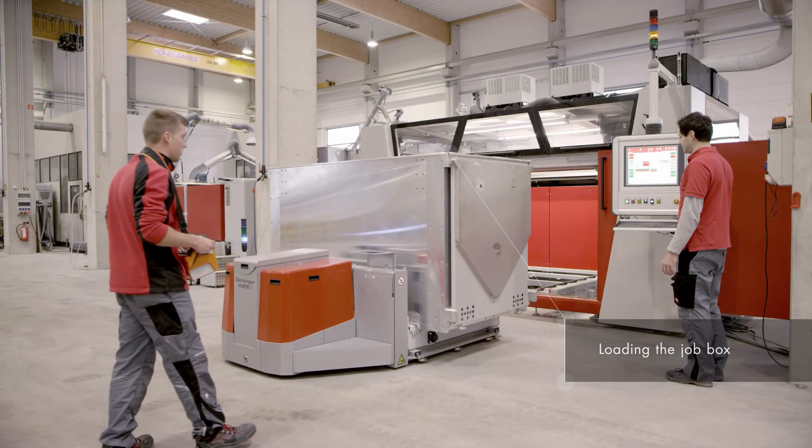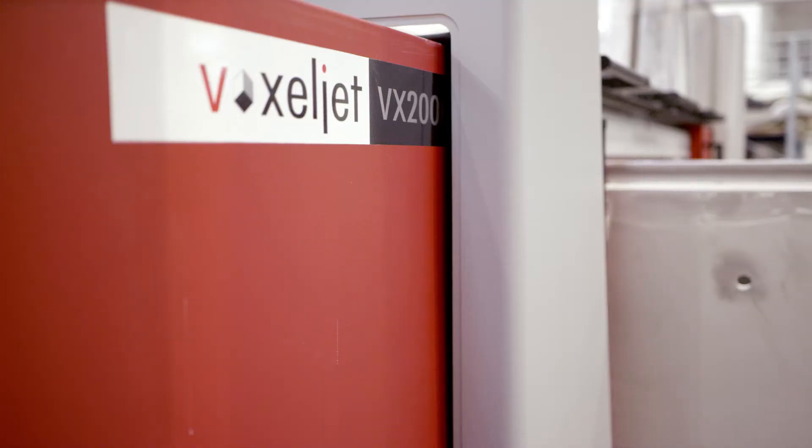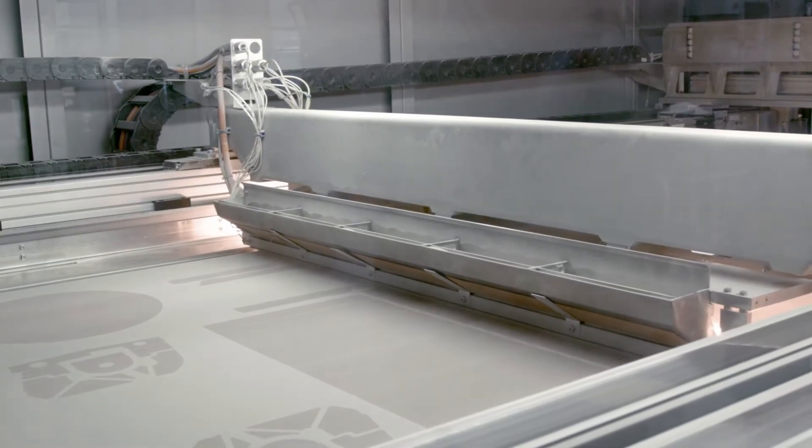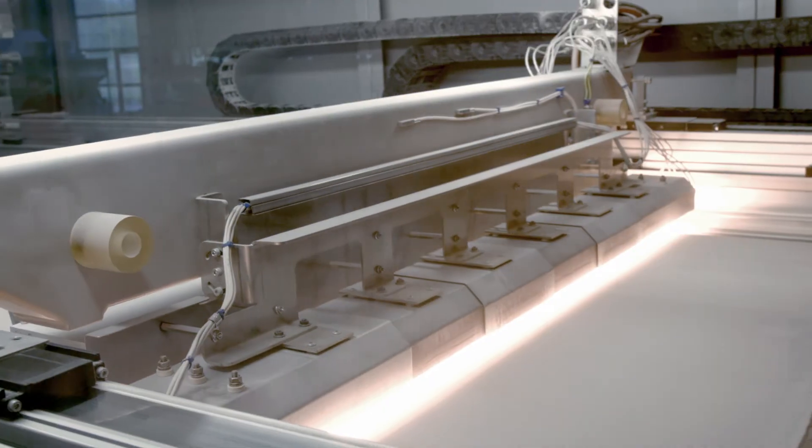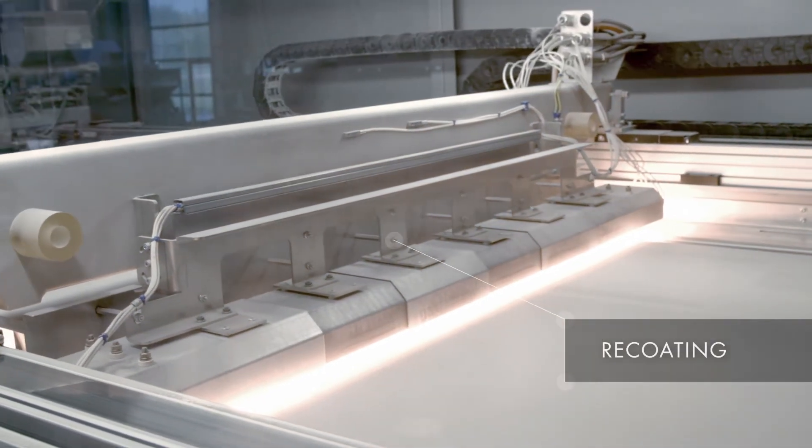The job box is loaded into the machine. The printing process starts with the coater and the even application of a sand layer.